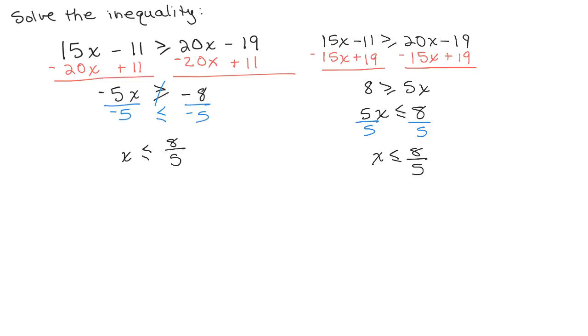Now, how would we write this in interval notation? So what would this look like on a graph? It's saying the solutions x are smaller than 8 fifths. So wherever 8 fifths is, let's just say 8 fifths is right here and 0 is here.